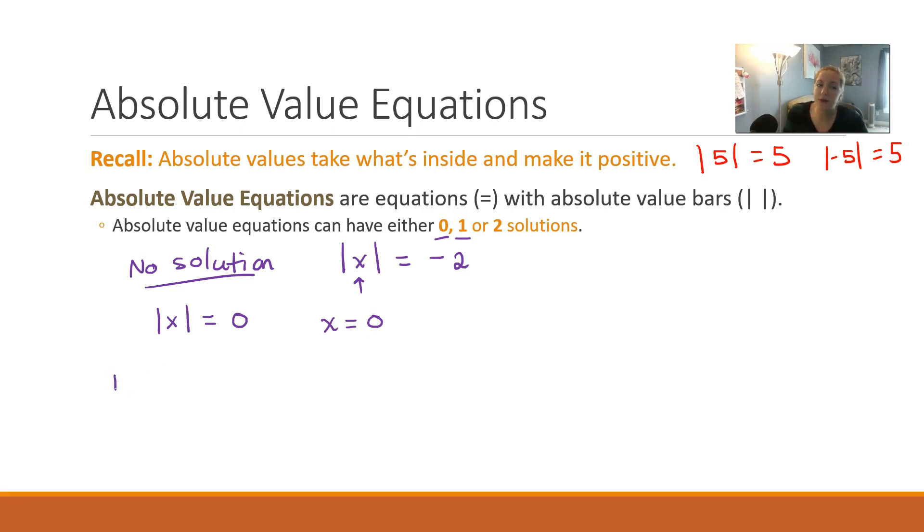Now, the most common you're going to see is two solutions. This will happen the most, so keep in mind, generally speaking, you will always expect two solutions to your absolute value equation. It's a good habit to get into to make sure you're catching both of those solutions.